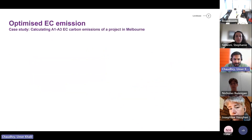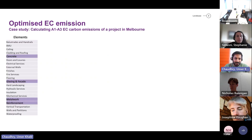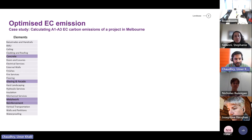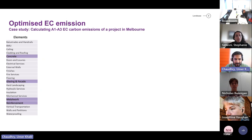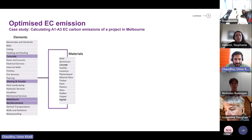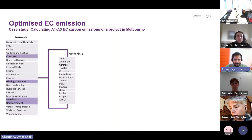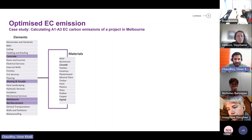I'll discuss how to optimize embodied carbon emissions using an example from a case study — a project we did in Melbourne. When doing life cycle assessment we divide our building into different elements such as concrete, doors, external walls, finishes, flooring, metalwork, and reinforcements. These elements are further divided into individual materials — single units like ceramics, timbers, paints, plastic, glass, and aluminium — which come under the materials category.